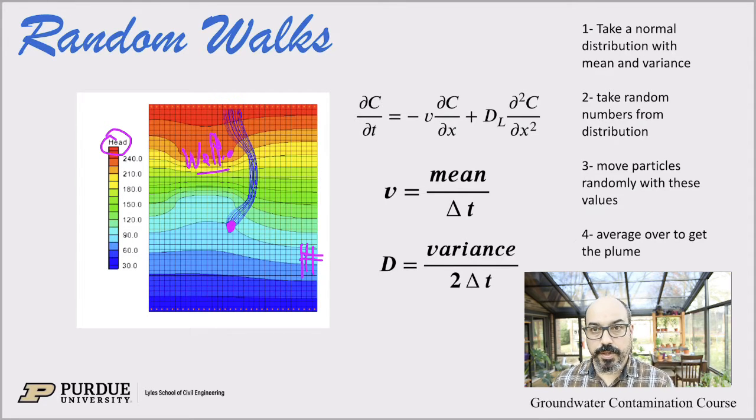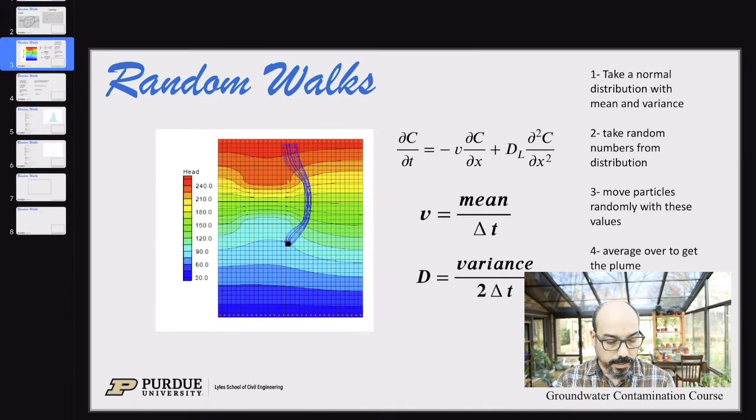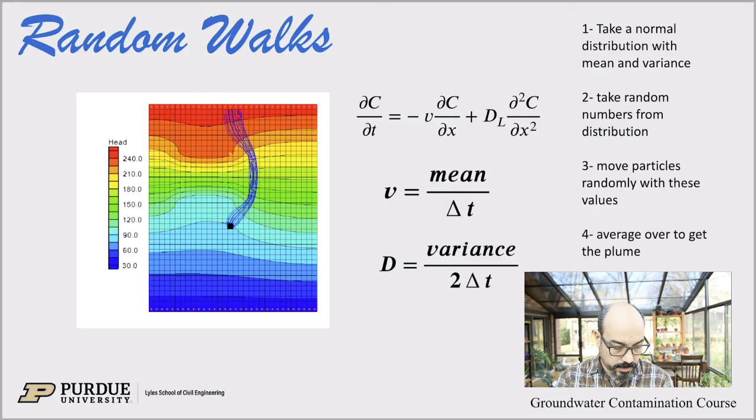You can see here that we have a pumping well and here there's pollution, there's probably an injection well. You can see the contours here are away so there's a pumping well here and an injection well here. If we want to know if our pumping well will be affected by pollution in injection well, then we can just release particles and trace their movement in that aquifer. You can see here that those particles actually never quite cross our well, so our well is going to be clean even though there is pollution in the aquifer around.